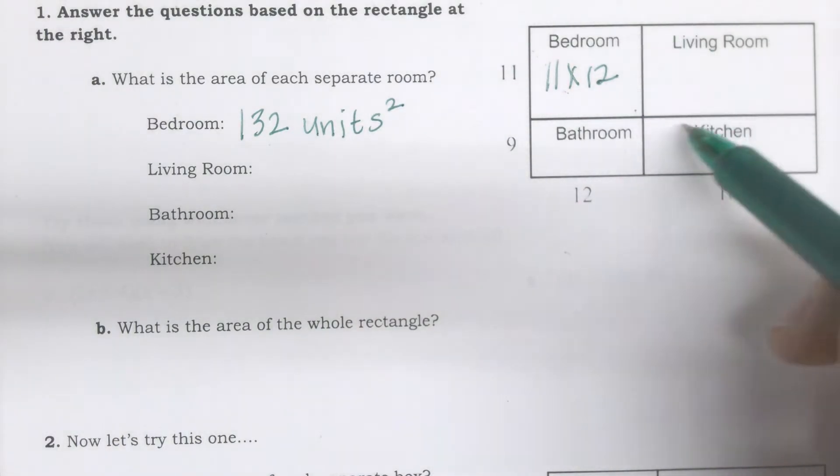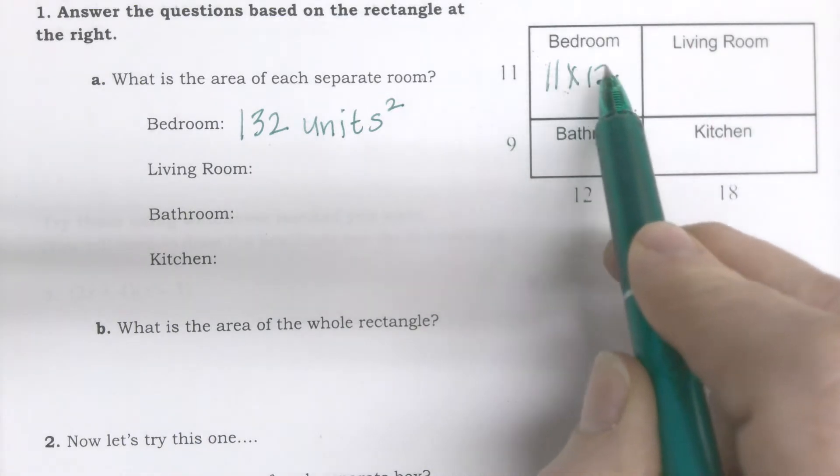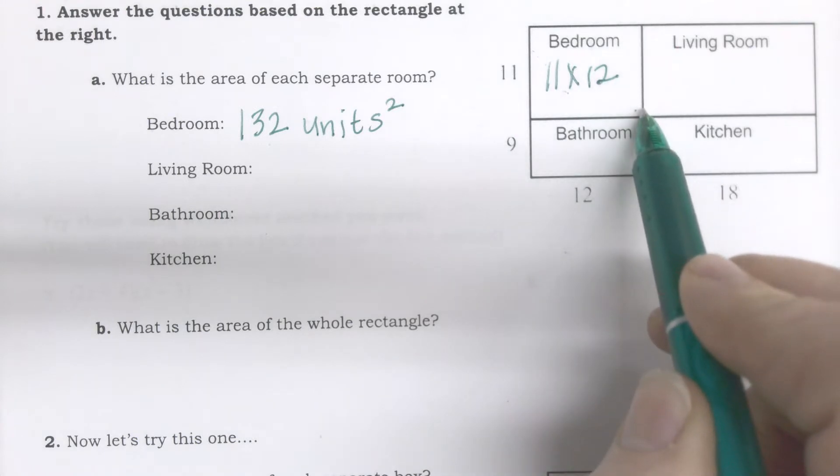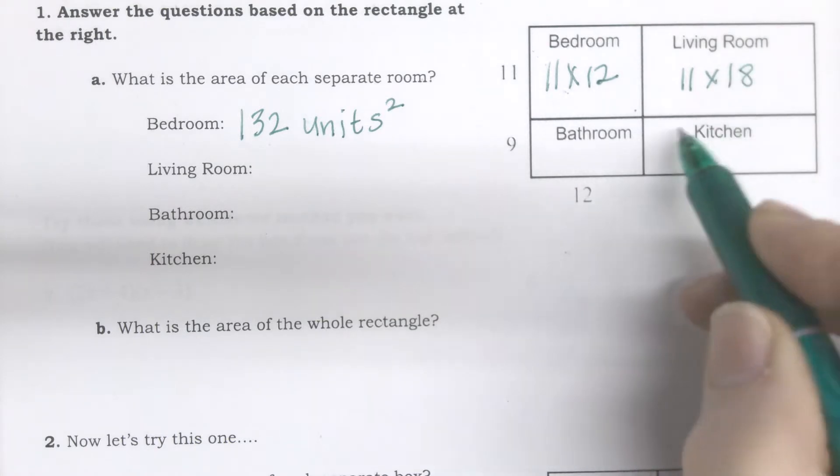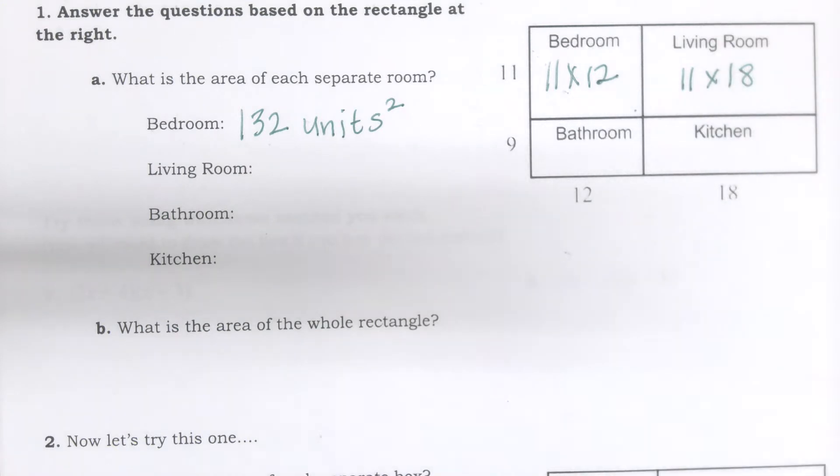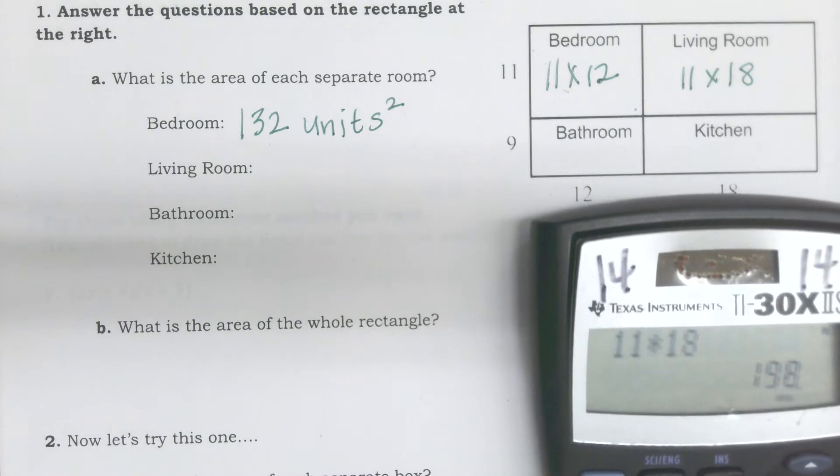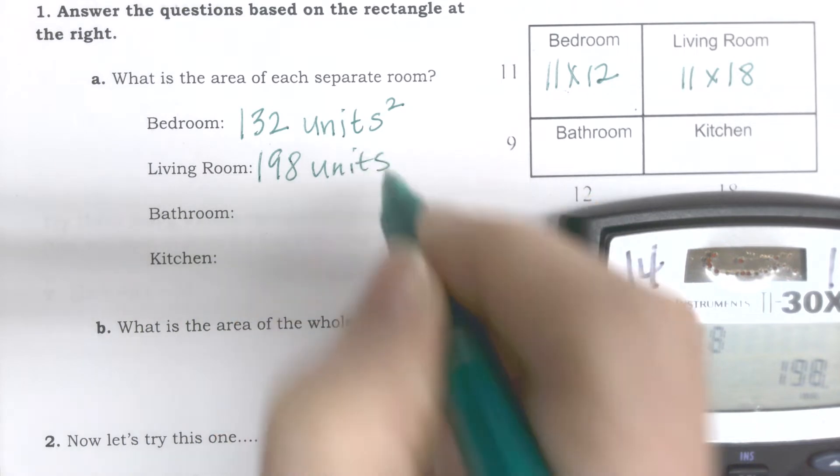The living room, even though it doesn't have lengths on either side, I know that this 11 is going to carry through to the length of that living room, and the width of 18 will carry through. So 11 by 18 is my living room, and when I do it on my calculator, I get 198 units squared.